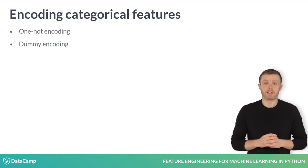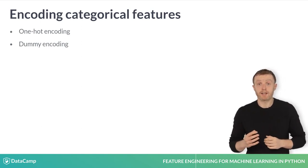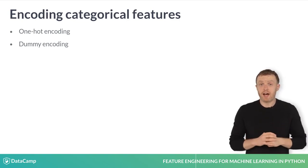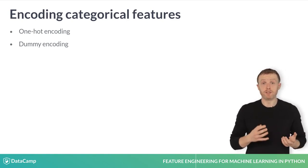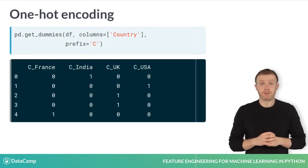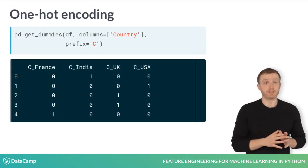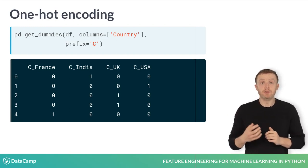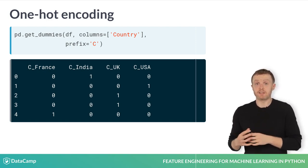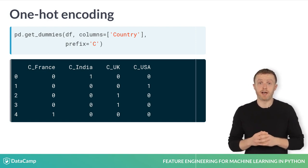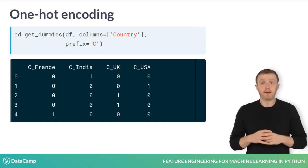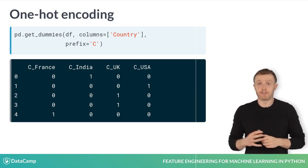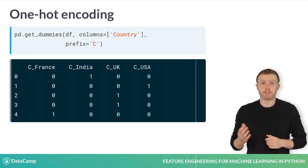There are two main approaches when representing categorical columns in this way: one-hot encoding and dummy encoding. These are very similar and often confused. In fact, by default, Pandas performs one-hot encoding when you use the get_dummies function. One-hot encoding converts n categories into n features. You can use the get_dummies function to one-hot encode columns — it takes a data frame and a list of categorical columns you want converted, and returns an updated data frame. Specifying a prefix with the prefix argument can improve readability, like the letter C for country used here.